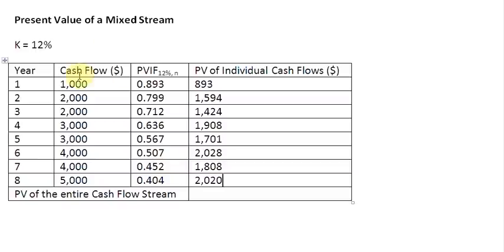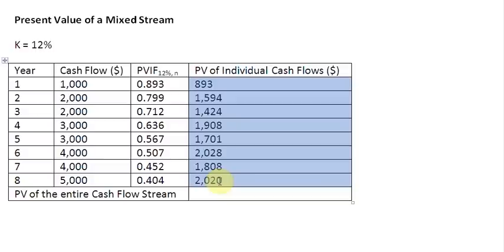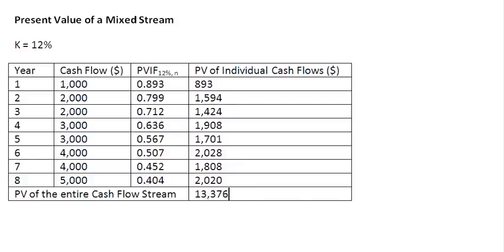Then 5,000 times 0.404 gives us 2,020. To find out the present value of this entire cash flow stream, we need to add up all the present values in this column. All the present values of individual cash flows, when added up together, give us the present value of the entire cash flow stream. The sum total of this column is $13,376, and that is the present value of this stream of cash flows running from year 1 to year 8.